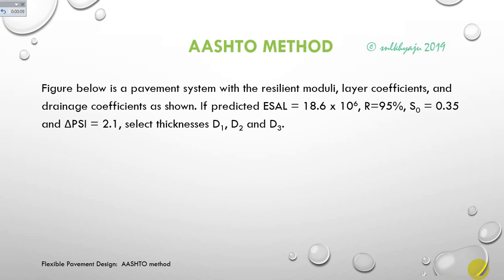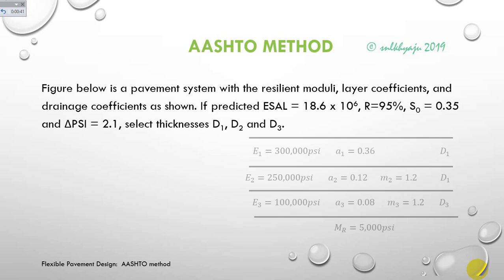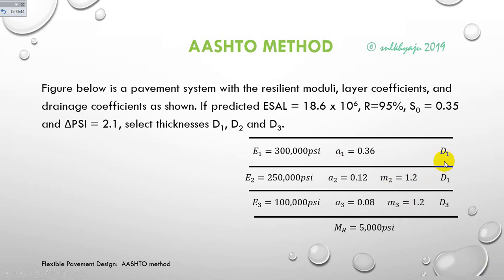The AASHTO method problem: a pavement system is given with resilient modulus, layer coefficient, and drainage coefficient as shown. Predicted ESAL equals 18.6 × 10^6, reliability 95%, standard deviation 0.35, and change in present service stability index equals 2.1. We need to select thickness d1, d2, d3 — the depth of wearing course, base course, and subbase course. If the layer coefficient for base course and subbase course is not given, the AASHTO method provides an empirical relation to determine them.